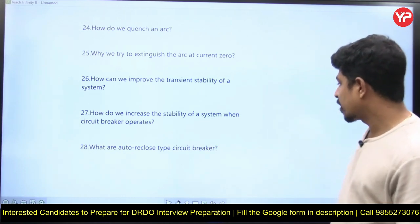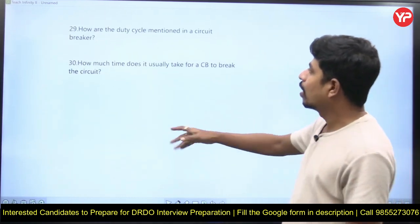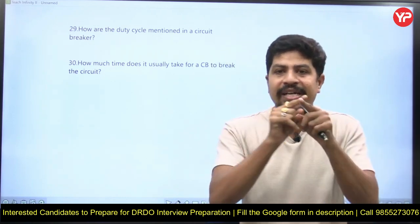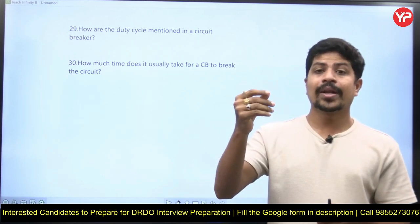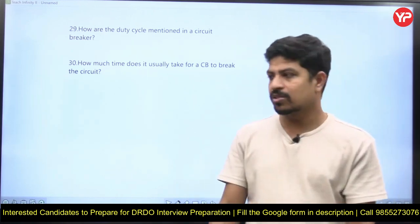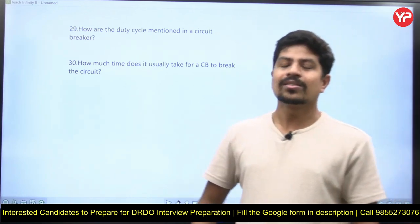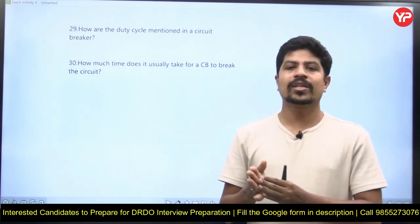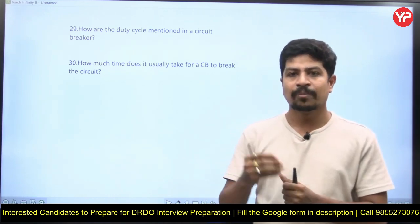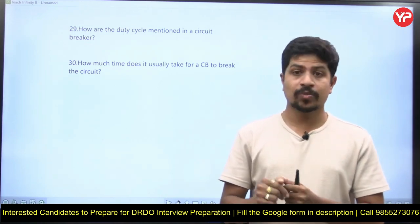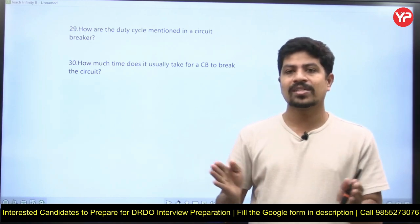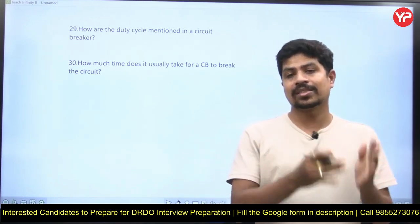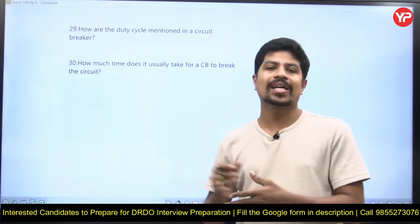What are auto-reclose type circuit breakers? How is the duty cycle mentioned on a circuit breaker? It is very important to know the nameplate details of a circuit breaker: voltage rating, power rating, and number of units of operation. How much time does it usually take for a circuit breaker to break the circuit? That depends on the type and installation location. The time should be short but not too short — if too short, the relay may trip unnecessarily. The exact time depends on the circuit breaker type and where it is installed.